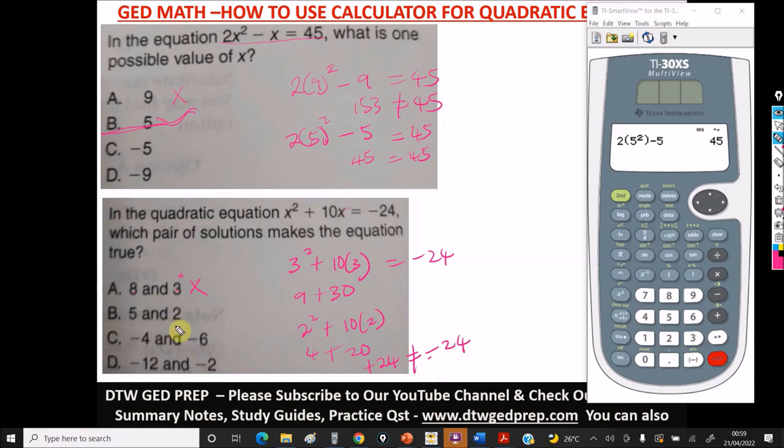So now let's test for the second one. I will pick the smallest number out of -4 and 6. I will use -4. So here we have -4. Let's use our calculator for this. So we have (-4)² + 10(-4).